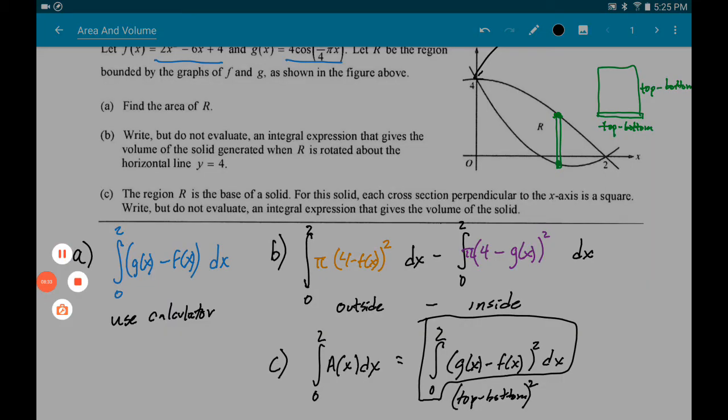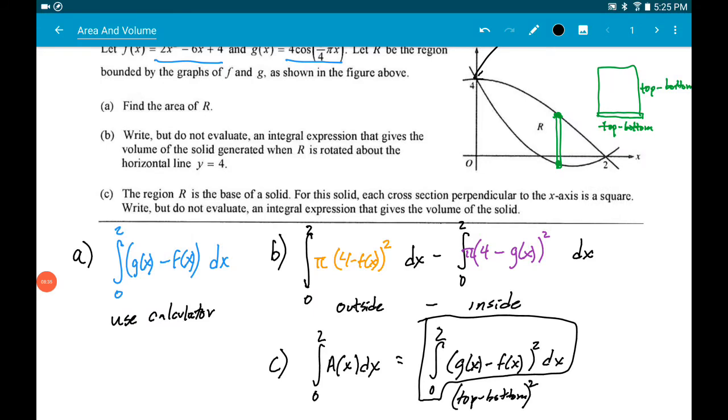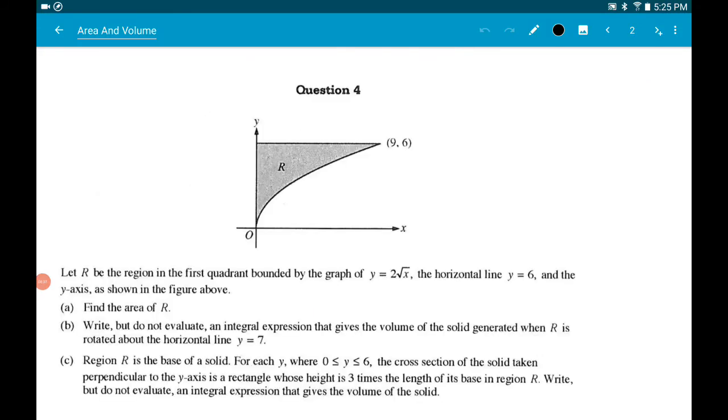Alright. I'll let you absorb that for a second. I'm going to move on to the next one and process it. So another FRQ. Let R be the region in the first quadrant bounded by the graph of 2√x and the horizontal line y equals 6. Let's see how far we can get on this.